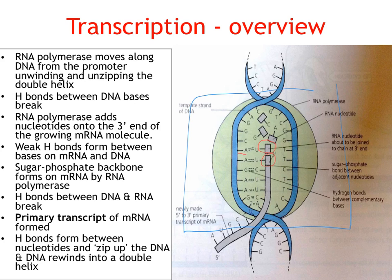You can see adenine on the DNA molecule pairing with uracil here on the mRNA — adenine here, uracil here, guanine here, cytosine here, and so on. The beginnings of our messenger RNA molecule are being formed. There are weak hydrogen bonds forming between the bases of the mRNA and the DNA, and a sugar-phosphate backbone forms on the mRNA as well, with RNA polymerase involved in that too.